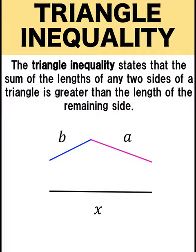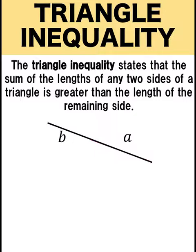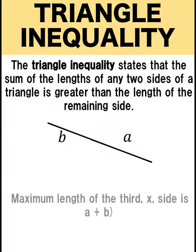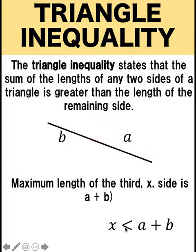If I rotate the blue side, there is a certain point where we need to stop rotating. Otherwise, we no longer have a triangle. That happens when we have this degenerate triangle — the sum of the lengths of the two sides equals the length of the third side, and our triangle is no longer two-dimensional. We want to avoid that degenerate triangle. So we impose some maximum length for the third side X. From this figure, we have shown that the length of the third side X cannot exceed the sum of the two sides A and B. In inequality form, X must be strictly less than A plus B.